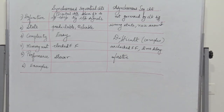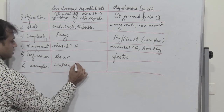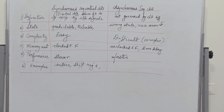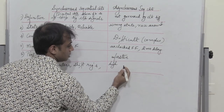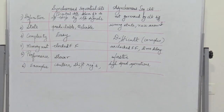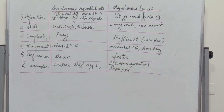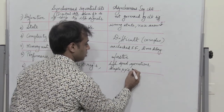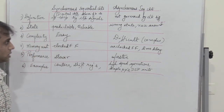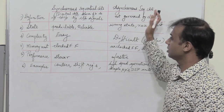Now for examples of synchronous sequential circuits, you have counters and shift registers. Whereas asynchronous sequential circuits are used for high speed operations — whenever we need digital circuits which need high speed performance. They are used in the design of simple microprocessors and also in the design of digital signal processing units. These are some of the fundamental differences between synchronous and asynchronous sequential circuits.